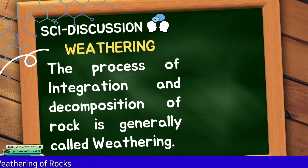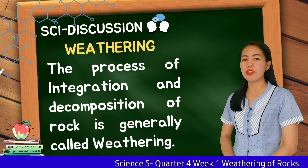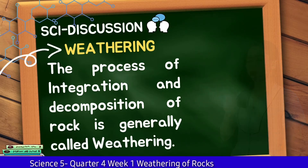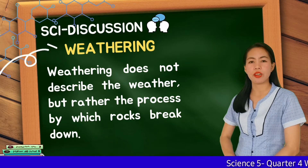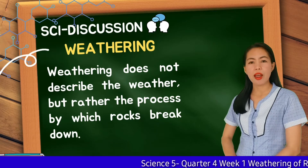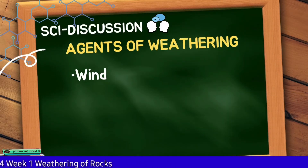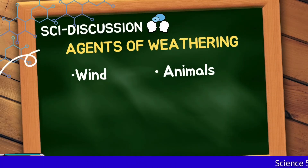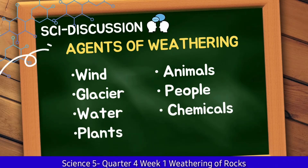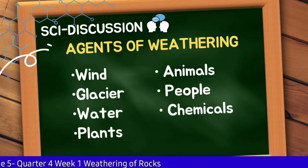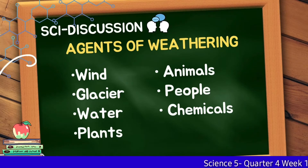The process of disintegration and decomposition of rocks is generally called weathering. Weathering does not describe the weather, but rather the process by which rocks break down. There are agents of weathering. These are the following: Wind, Glacier, Water, Plants, Animals, People, and Chemicals.